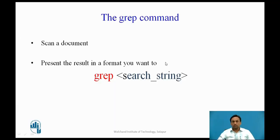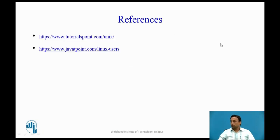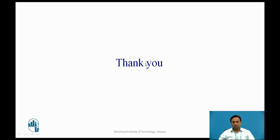To recap: how many files are used for representing the different standard streams? The answer is 3 — that is standard input, standard output, and standard error. These are the references. Thank you.